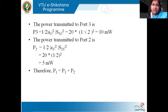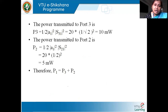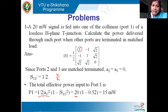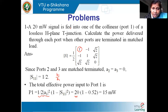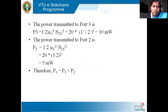Now, the power transmitted at port three. To find it, we need S31. From the S-matrix, S31 is the third row, first column value — which is 1/√2, since (1/2) × √2 = 1/√2. So the power at port three is: (1/2)|A1|² × |S31|² = 20 milliwatts × |1/√2|² = 20 × 0.5 = 10 milliwatts.